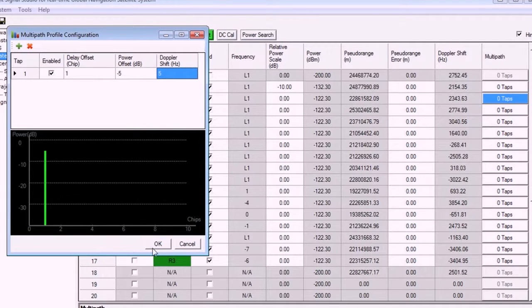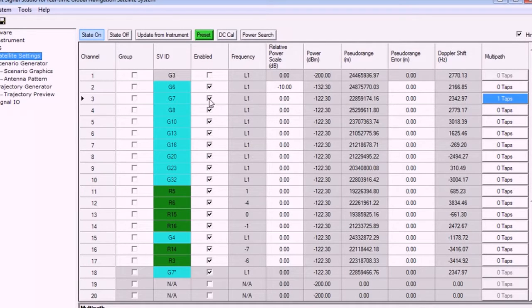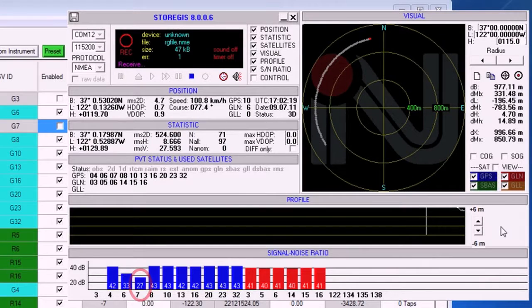We can then turn off the line of sight channel for G7. On the GNSS receiver software, we can see the power variation in the multipath signal.